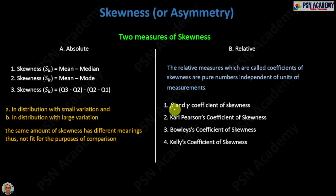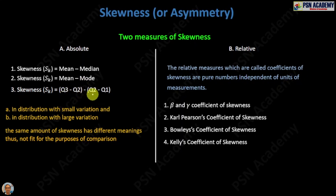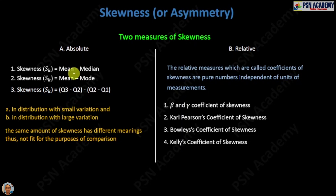In this video we will learn about the beta and gamma coefficient of skewness, one of the four relative measures of skewness. In the previous video we talked about absolute measures of skewness: mean minus median, mean minus mode, and the quartile-based measure. However, the problem with these absolute measures is that in distributions with small or large variation, the same amount of skewness has different meanings, so they are not good enough to give a clear idea about skewness.